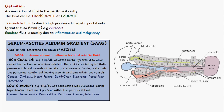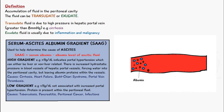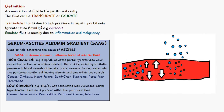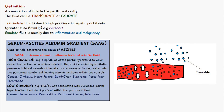A high gradient — for example 11 grams per deciliter or above — indicates portal hypertension, which can be either liver related or non-liver related. This result means there's not much protein in the ascites. Increased hydrostatic pressure in the hepatic portal vein blood vessels forces water into the peritoneal cavity but leaves the albumin proteins within the vessel, so the albumin level of the ascitic fluid will be low. Causes of this type include cirrhosis, heart failure, Budd-Chiari syndrome, and portal vein thrombosis.